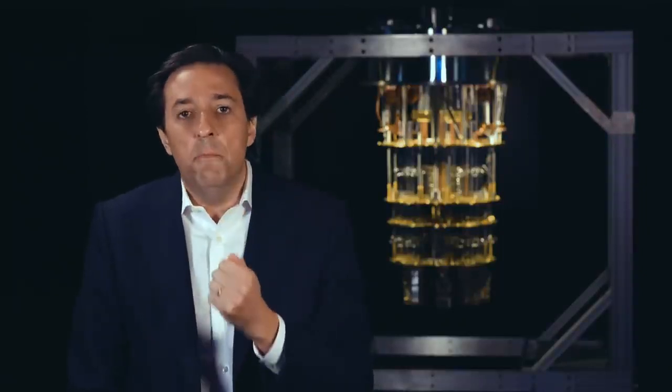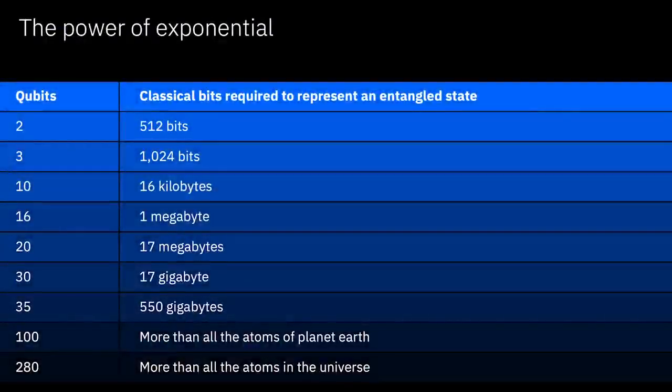Notice how very different that is from classical bit-based operations. And there is a really important relationship between this entangled property and the amount of information that we can process. And this relationship is exponential. What this table shows is the number of classical bits, zeros and ones, that are required to represent that complex entangled state that I just described. And here's an amazing number. By the time you have a hundred perfect qubits that are entangled with one another, if you needed to describe them using zeros and ones, you would need to devote every atom of planet Earth to store those zeros and ones. Clearly that's not possible. In fact, by the time you have 280 qubits, you would need every atom of the known universe.